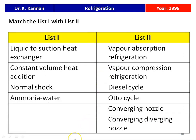The next question is a match-the-list from the 1998 question paper. List 1: liquid-to-suction heat exchanger, constant volume heat addition, normal shock, ammonia-water. List 2: vapor absorption refrigeration, vapor compression refrigeration, diesel cycle, Otto cycle, converging or converging-diverging nozzle. Answers: liquid-to-suction heat exchanger → vapor compression refrigeration; constant volume heat addition → Otto cycle; normal shock → converging-diverging nozzle; ammonia-water → vapor absorption refrigeration.